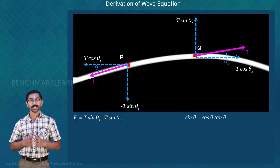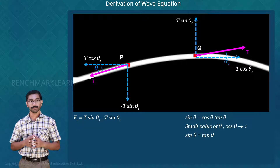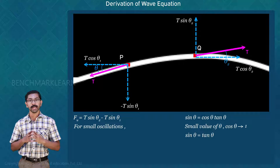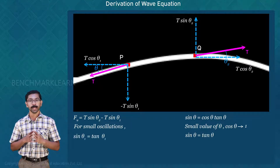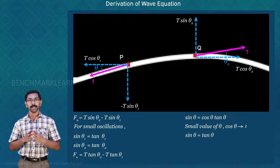We know that sin θ = cos θ · tan θ. For small values of θ, cos θ tends to 1, so sin θ equals tan θ. If the oscillations are small, the angles θ1 and θ2 become small. Hence, sin θ1 = tan θ1 and sin θ2 = tan θ2. Therefore, the net force becomes Fu = T tan θ2 − T tan θ1.